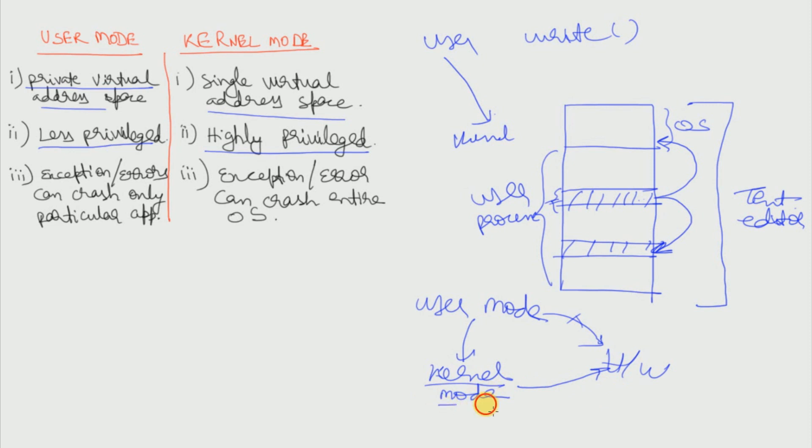So we can say that a kernel mode is highly privileged because it can access any part of the area, any memory, and it also has access to hardware as well.